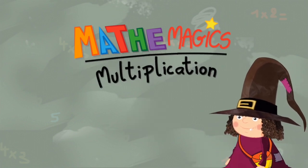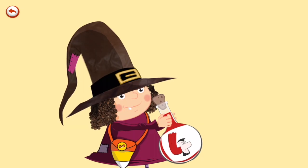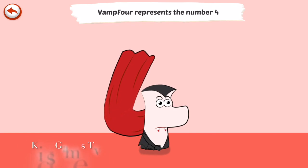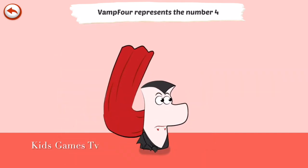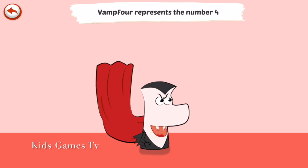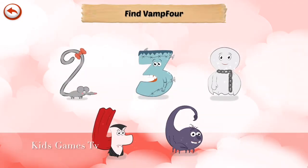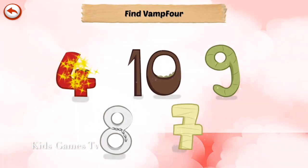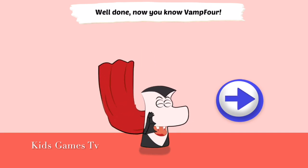Hello. Vamp 4 represents the number 4. Vamp 4 is a vampire who loves biting all that is around him. Well done, now you know Vamp 4.